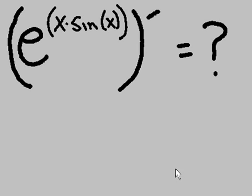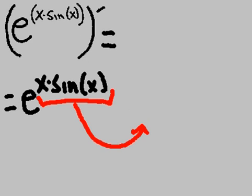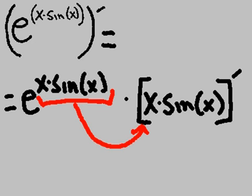E to the power of x sine of x prime equals what? Let's move it up. I take the exponent, x times sine of x, and I take the derivative of that exponent.